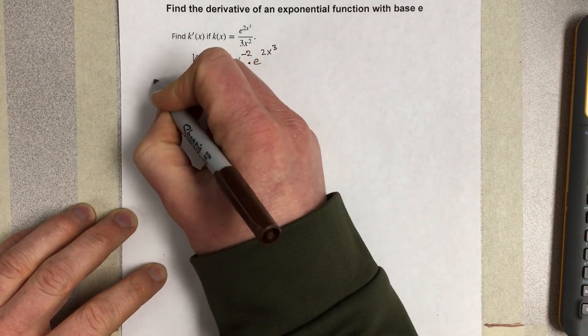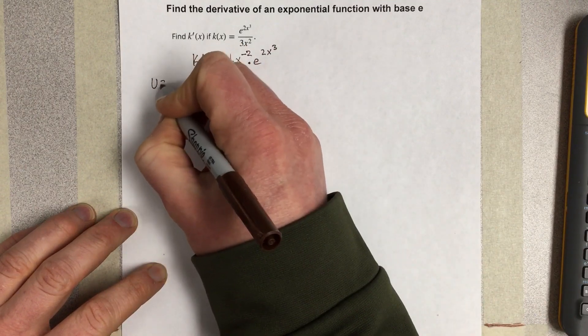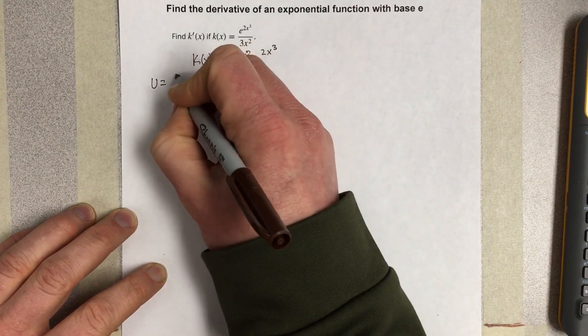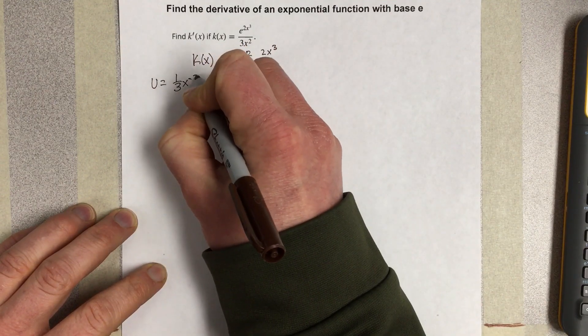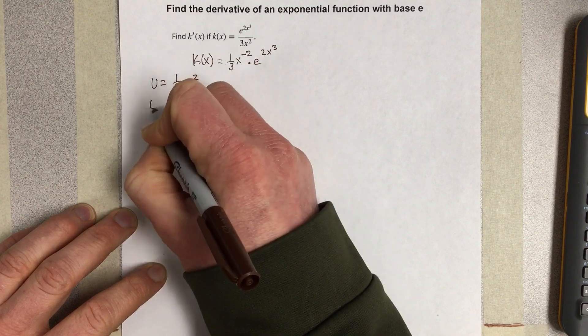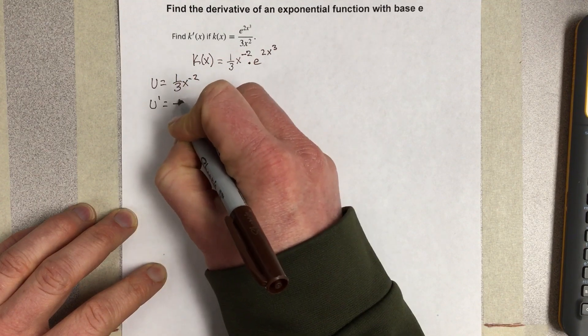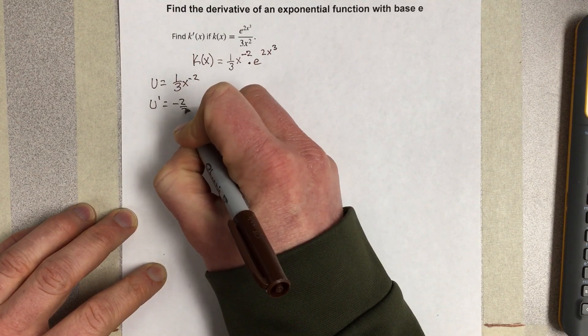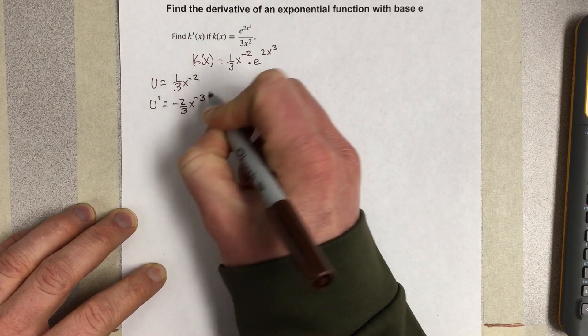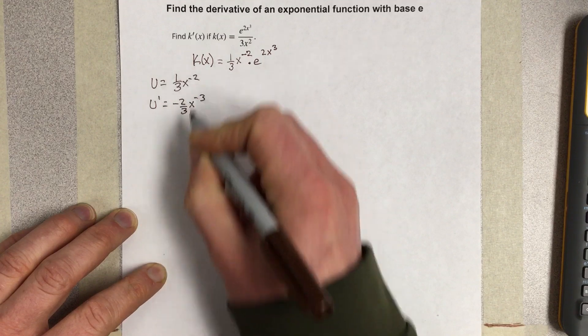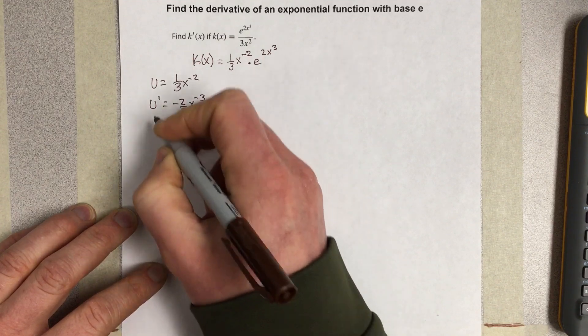I'm going to say that u is equal to 1 third x to the negative 2, which makes u prime negative 2 thirds x to the negative 3rd. I take that derivative using the power rule.